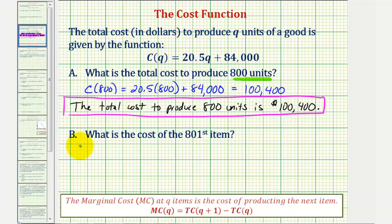So we'll take the total cost of 801 items and subtract the total cost of 800 items. When Q equals 801, we'd have 20.5 times 801 plus 84,000. And when Q is 800, which we found above, we'd have 20.5 times 800 plus 84,000.